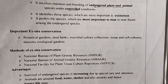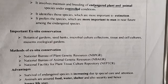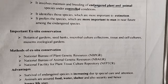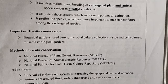Methods of ex-situ conservation: first, the National Bureau of Plant Genetic Resources, used for plant conservation; second, the National Bureau of Animal Genetic Resources, used for conservation of animal tissues and endangered species; third, the National Facility for Plant Tissue Culture Repository. These are the three methods for ex-situ conservation.